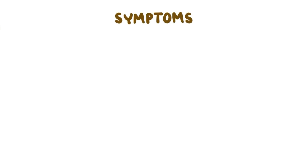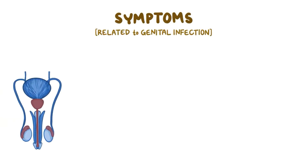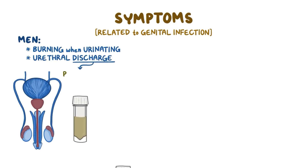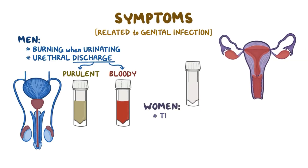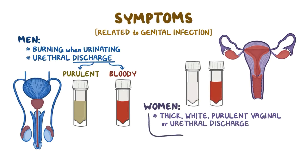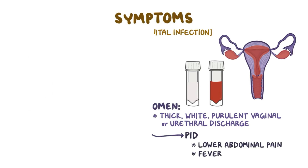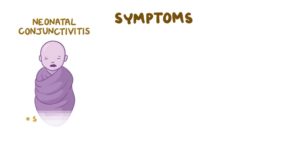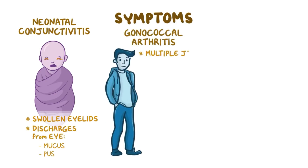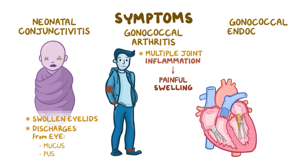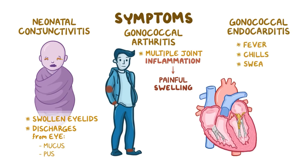The first symptoms of N. gonorrhoeae infection are related to the genital infection. In men, there can be a burning sensation when urinating, as well as clear urethral discharge, which can become purulent and bloody. In women, there's usually thick, white, purulent vaginal or urethral discharge, which can also turn bloody sometimes. If the infection progresses to PID, there might be lower abdominal pain and fever. With neonatal conjunctivitis, there can be swollen eyelids with mucus and pus discharges from the eye. In gonococcal arthritis, there's multiple joint inflammation which results in painful swelling of the wrists, ankles, and elbows. With gonococcal endocarditis, there might be fever, chills, sweating, and malaise.